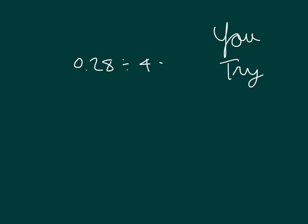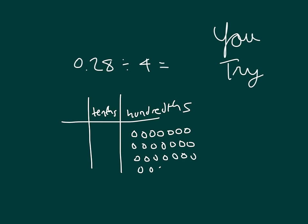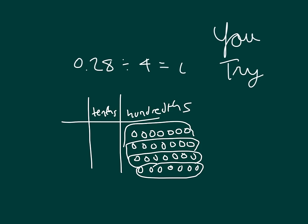Here's a place value chart. We have 28 hundredths divided by 4. It's easiest to think about hundredths. 28 hundredths divided by 4 is 7 hundredths. One more row of 7, and I'd group them because I'm dividing by 4 — dividing those into 4 equal groups — gives 7 hundredths.